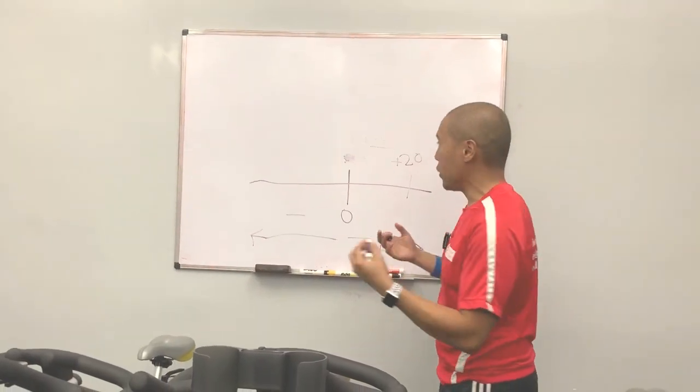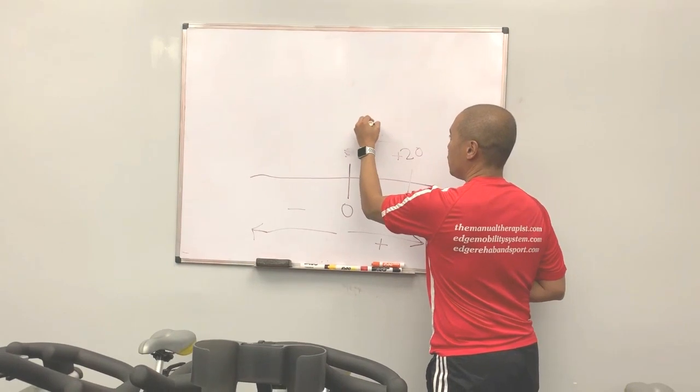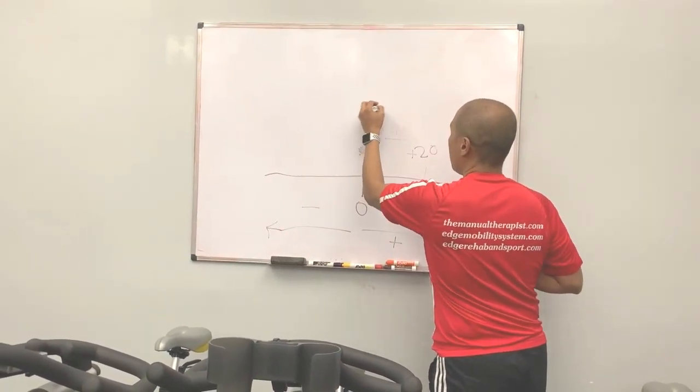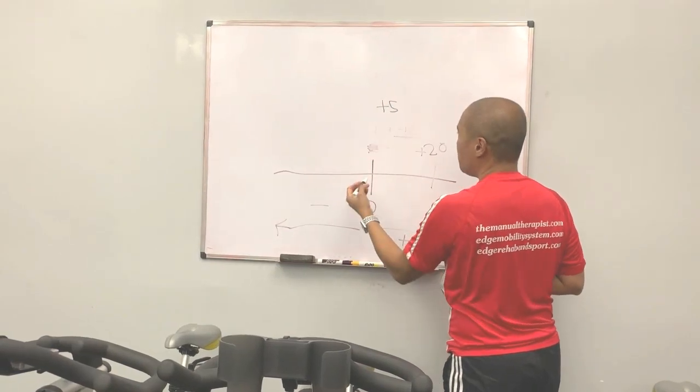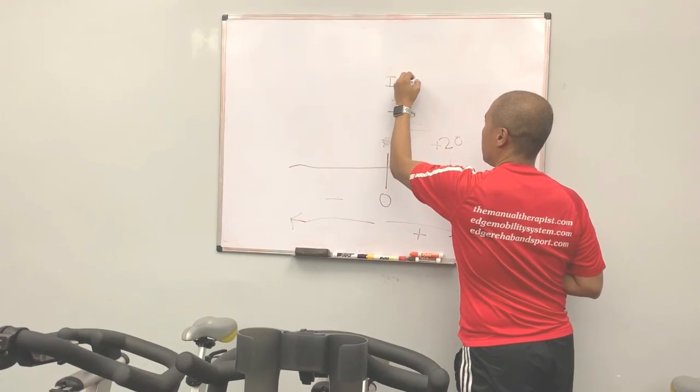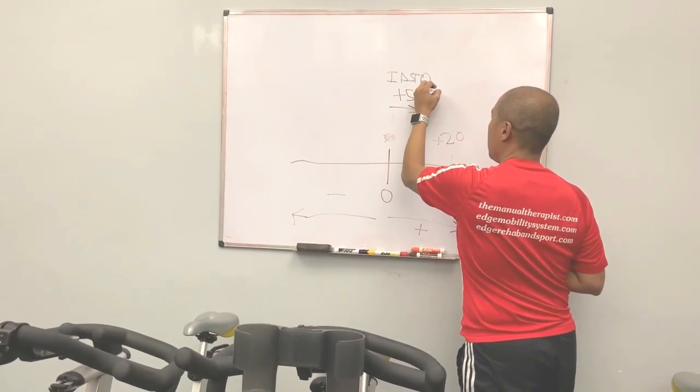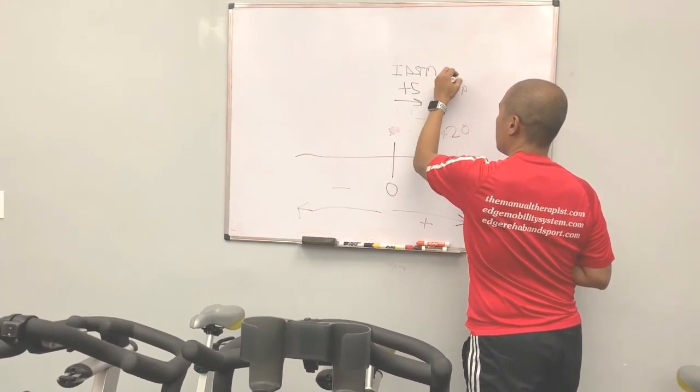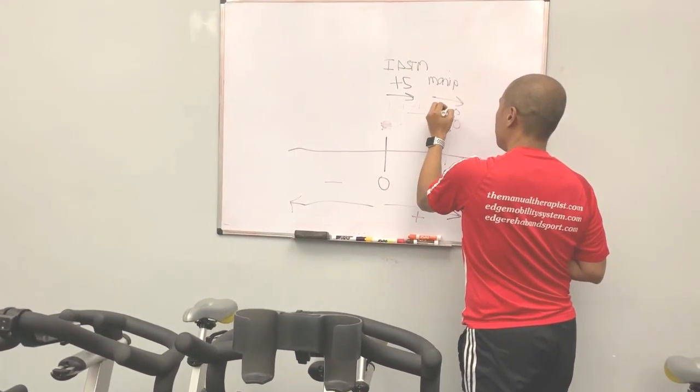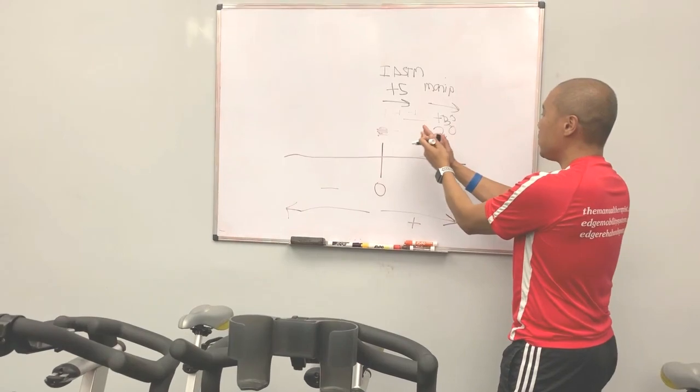When we do something like soft tissue technique or needling or manipulation, each one of those might be a plus five. It's a novel, non-threatening stimulus. So I do a little IASTM, I do manip, now you're back at 20 or even 30 if it's greater.